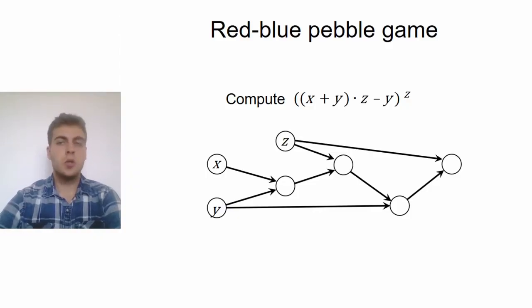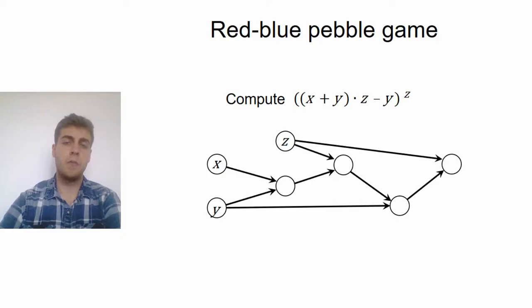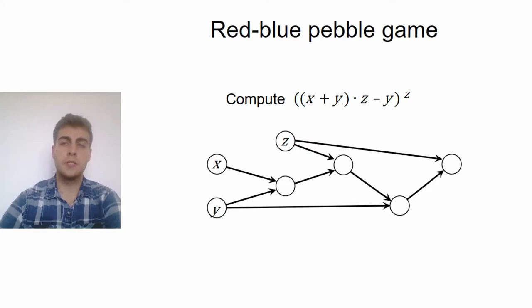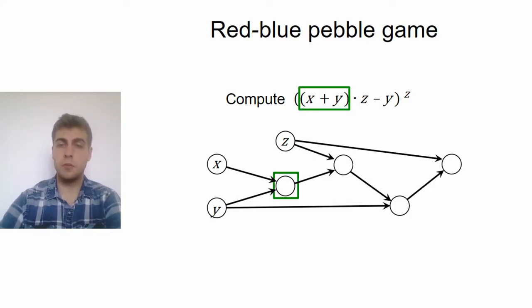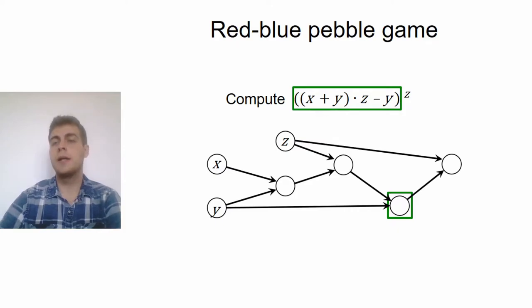The goal of this talk is to model how a computation works. So if you have an expression like this to compute, then you can model this as a directed acyclic graph, where the source nodes correspond to the inputs of the computation and the sink nodes correspond to the final outputs. So for example, in this case, you first have to add x and y, then do a small computation on this with the value of z, then you again need the value of y, and again the value of z, and so on.